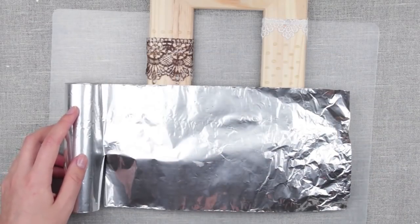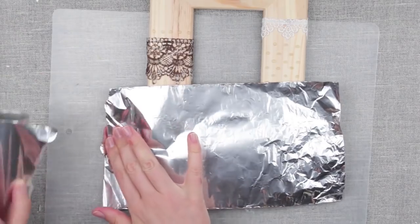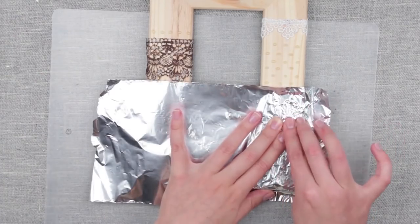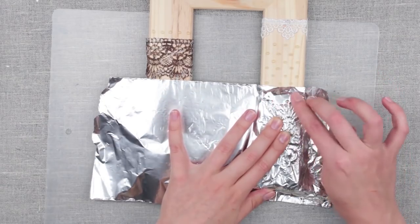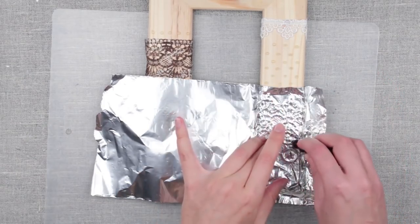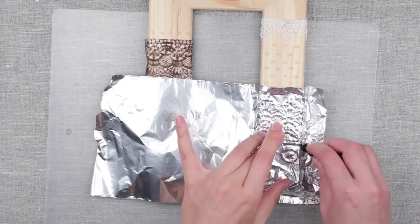Measure the foil at the frame size with extra space. Press against the frame and make the ornament visible by smoothing the foil with your fingers. You can use something hard but not sharp to define the pattern.